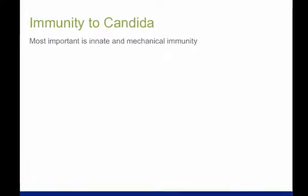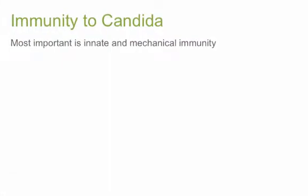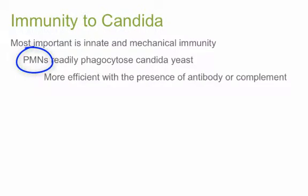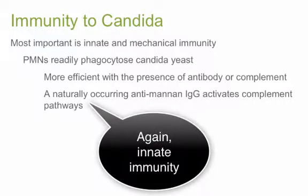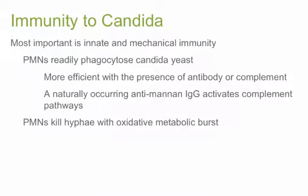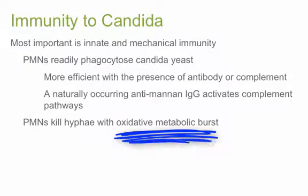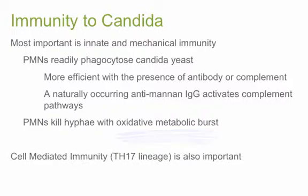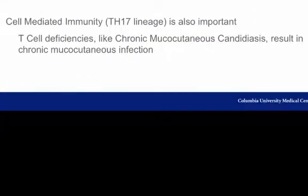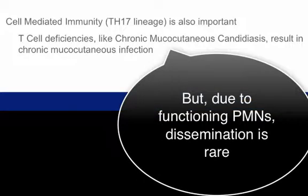Innate and mechanical immunity are the most important defense mechanisms against candidiasis. PMNs provide a hardy first-line defense, more efficient in the presence of antibody or complement. A naturally occurring anti-Mannan IgG activates the classical and alternate complement pathways. Unlike yeast, hyphae are too large to be ingested by PMNs, but PMNs can still kill hyphae with an oxidative burst. Cell-mediated immunity is also important — in chronic mucocutaneous candidiasis, a T-lymphocyte immunodeficiency results in chronic oral and vaginal candidiasis.